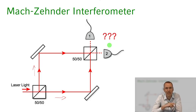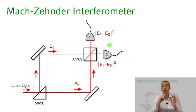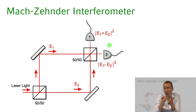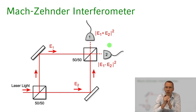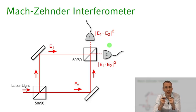But that's not the case — only in a special case would that be true. In optics it is wave mechanics, and just as in quantum mechanics, what we have to add is not the intensities but the fields, and then take the norm squared to calculate intensities.